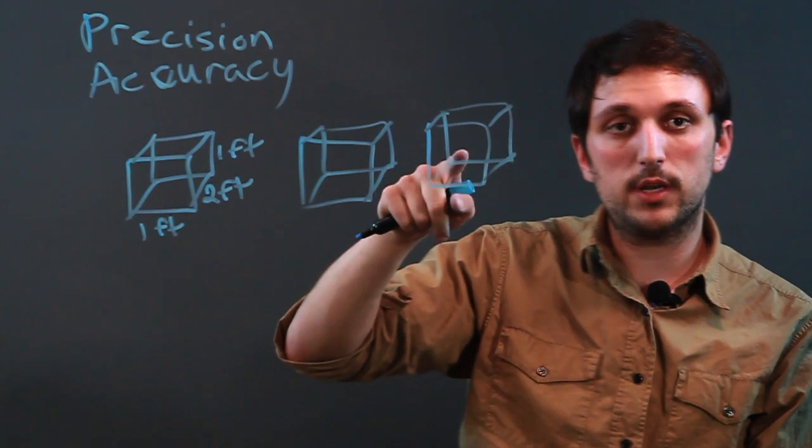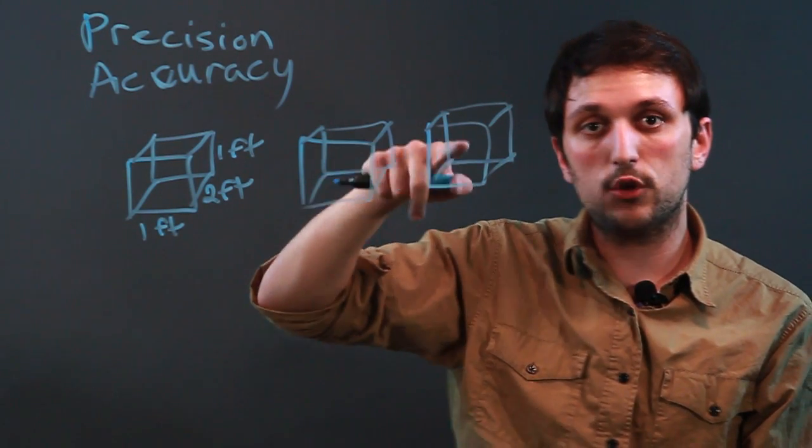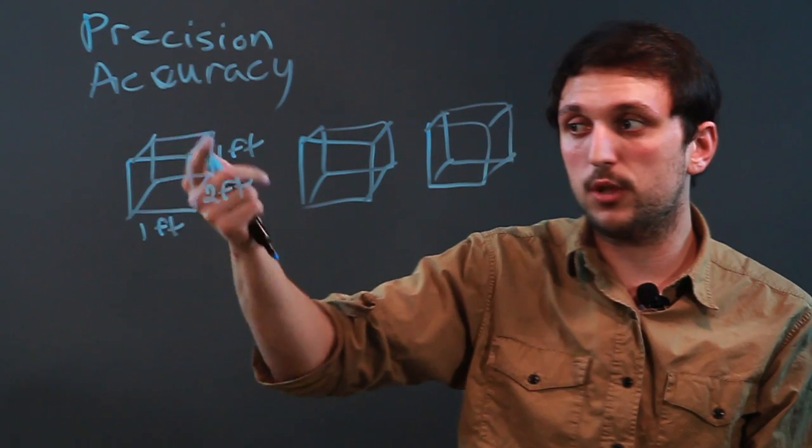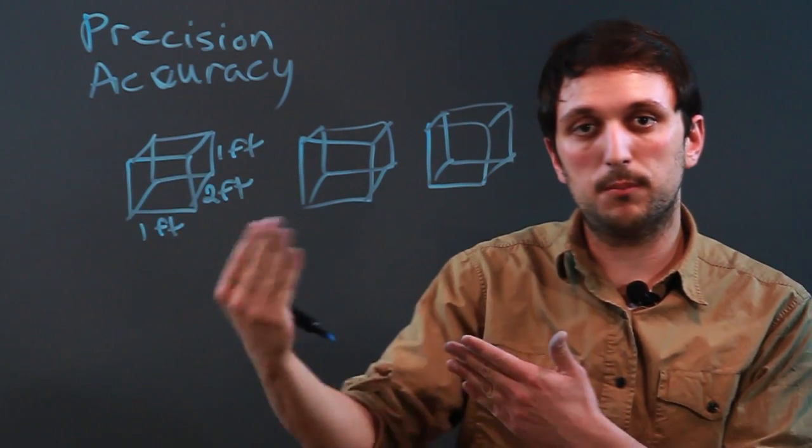But in general, precision is how well you can replicate your own mathematics, whereas accuracy is how well you can replicate something you have seen or been presented with.